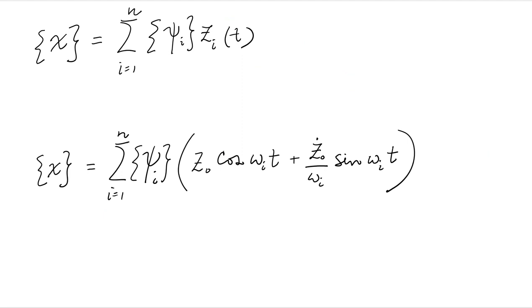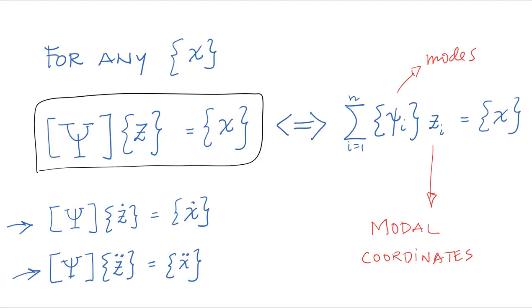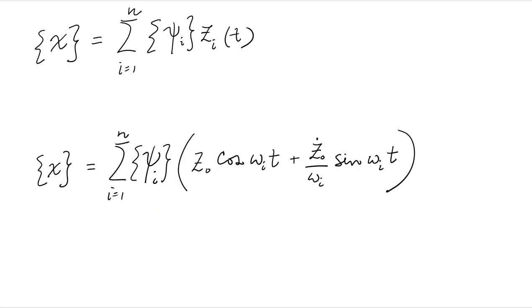That was our original definition. This is what we said right here. So to obtain the physical coordinates in x, we simply multiply the modal coordinate by phi. And so that's what we're doing in this step.